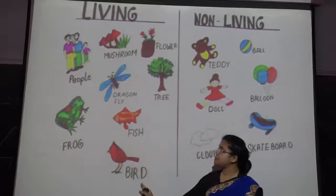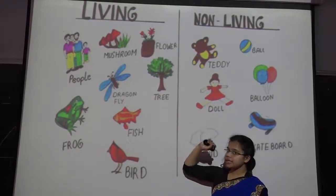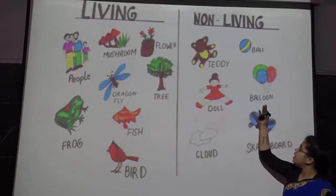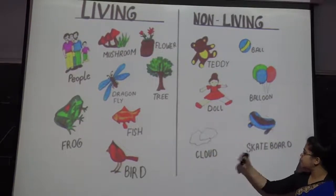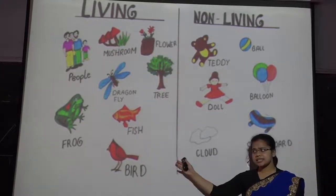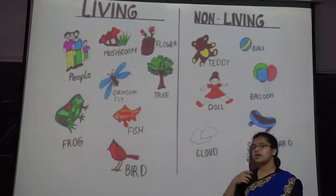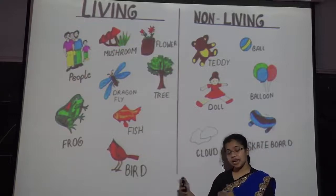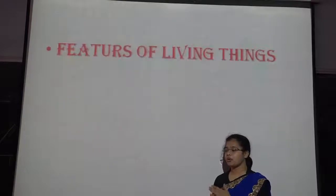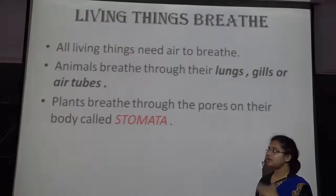Living things include frog, fish, bird, people, and trees. Non-living things include dolls, balloons, clouds, and teddy bears. Through this, you can understand how to classify things into living and non-living things. Now let us look at the features of living things.